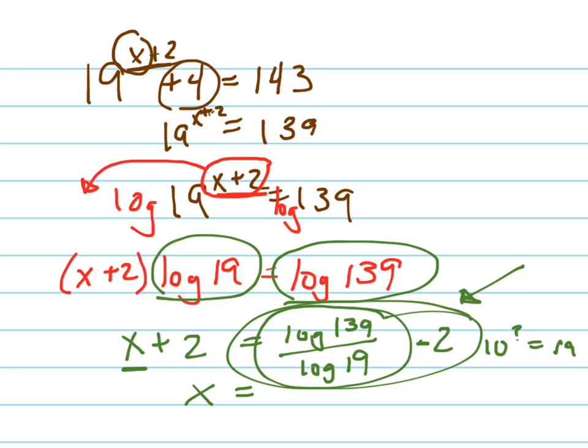Once you punch that carefully in your calculator, you're going to get a decimal approximation. It's going to be around negative 0.32. But you don't want to round it. You want to keep that number in your calculator.